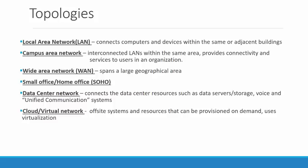Now let's look at topologies. A local area network connects computers and devices within the same building or adjacent buildings — everything is close, hence the term 'local.' A campus area network interconnects LANs within the same area, providing connectivity for servers, computers, phones, and services to users within the organization — it can span multiple buildings but not a large geographical area. A wide area network spans a large geographical area, oftentimes using a public network such as the Internet.